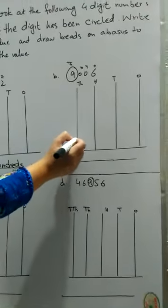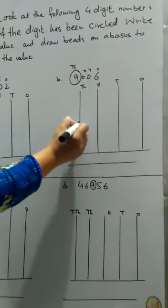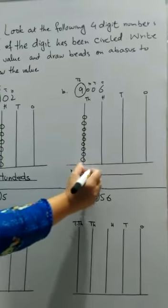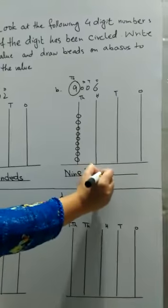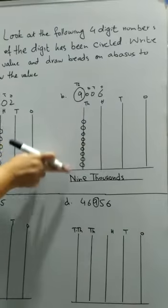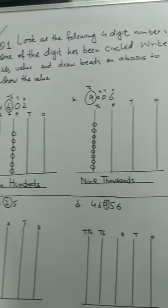We will draw nine beads: one, two, three, four, five, six, seven, eight, and nine. The place value is nine thousand.